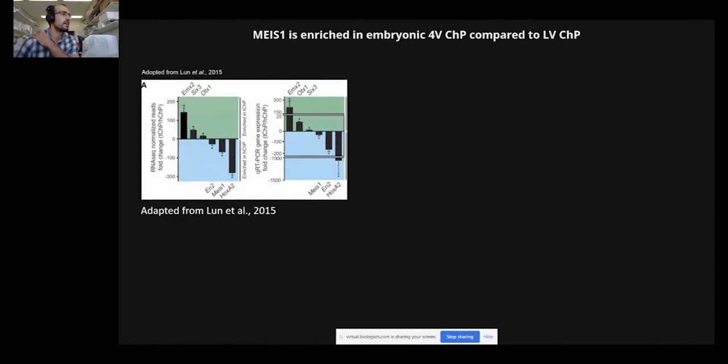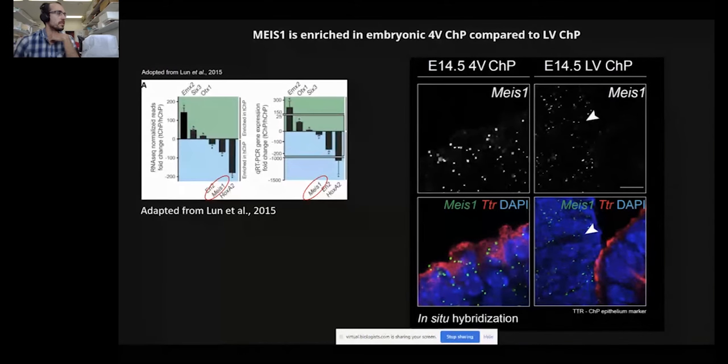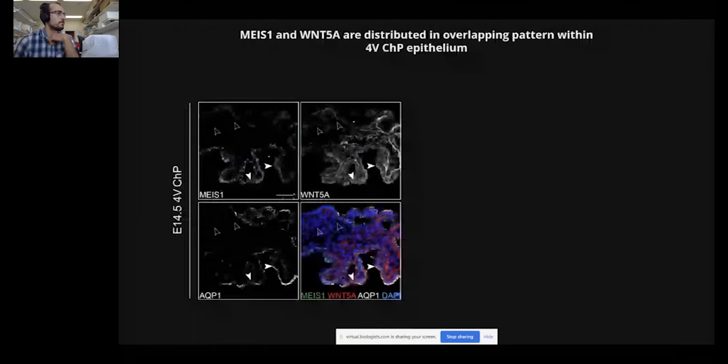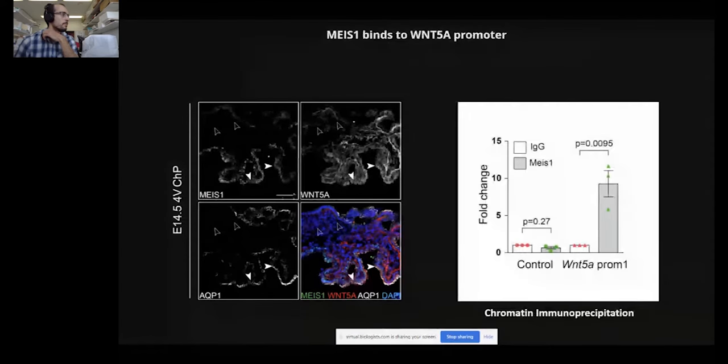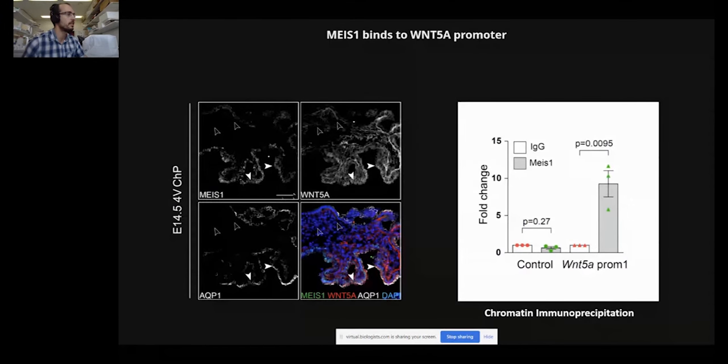Next, we wanted to identify the factors that may underlie this spatially specific expression of WNT5A, and one of the interesting candidates was the MEIS1 factor that has been previously identified to be enriched in the fourth ventricle choroid plexus as compared to the lateral ventricle choroid plexus. We noticed that WNT5A segregates to the same region within the developing fourth ventricle choroid plexus as MEIS1, suggesting a possible interaction. We confirmed this hypothesis by showing that indeed MEIS1 binds directly to the WNT5A promoter in the developing fourth ventricle choroid plexus.